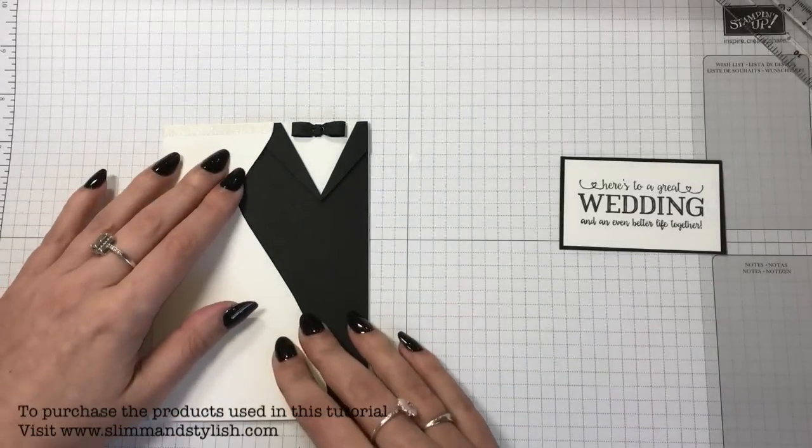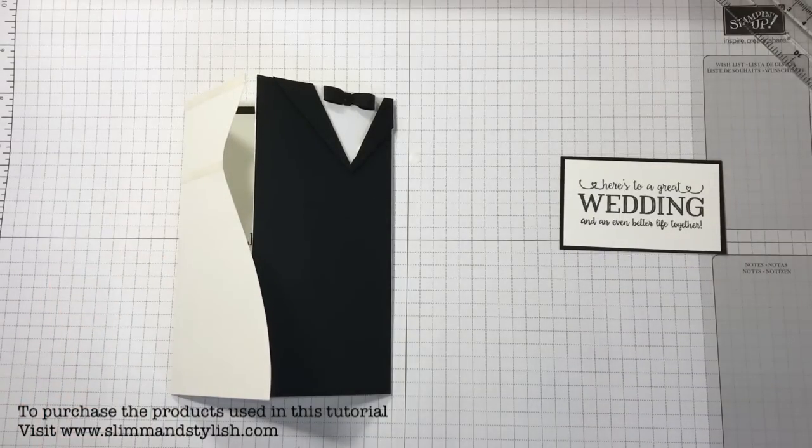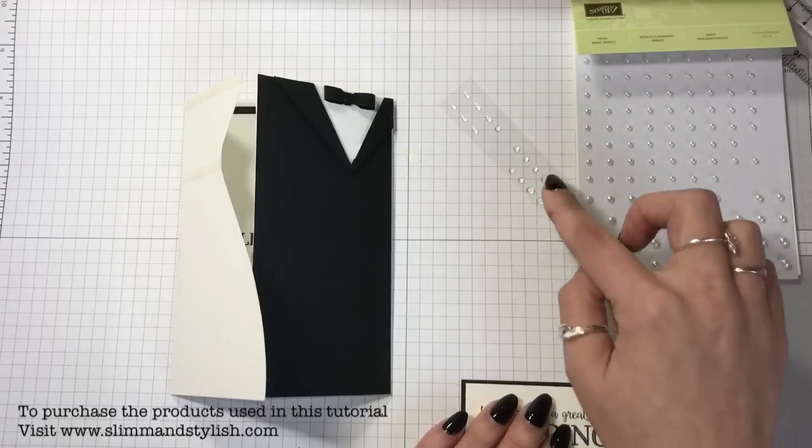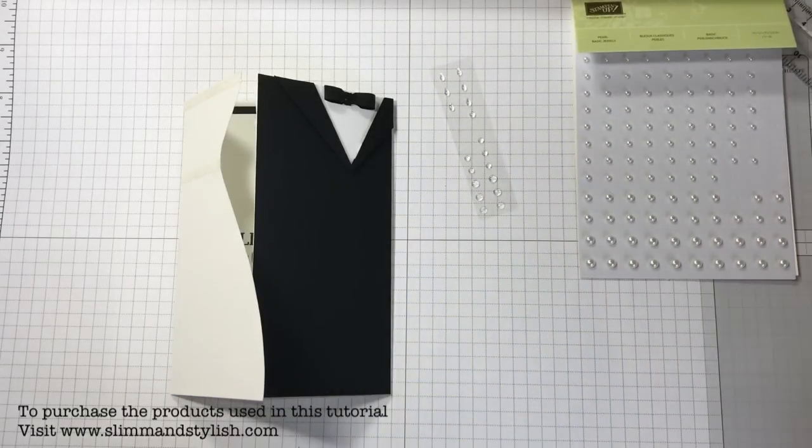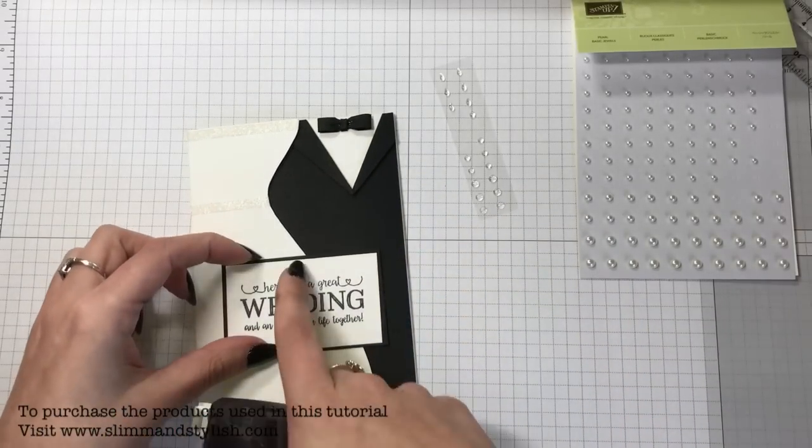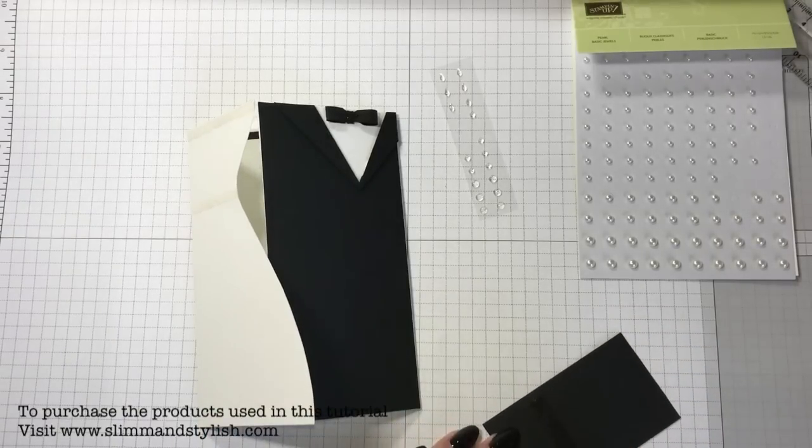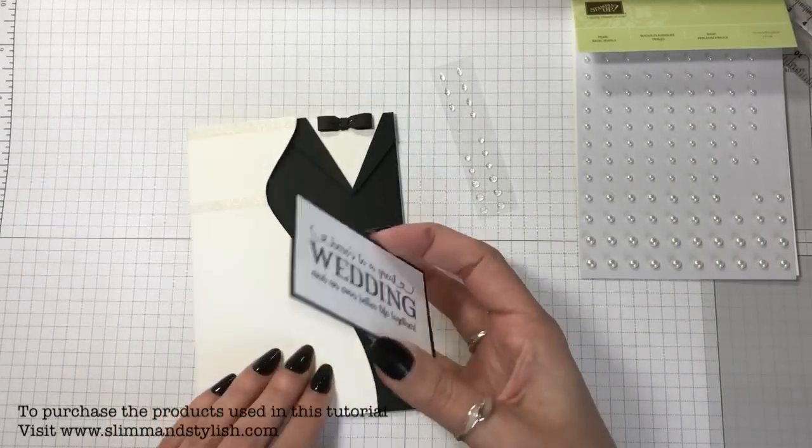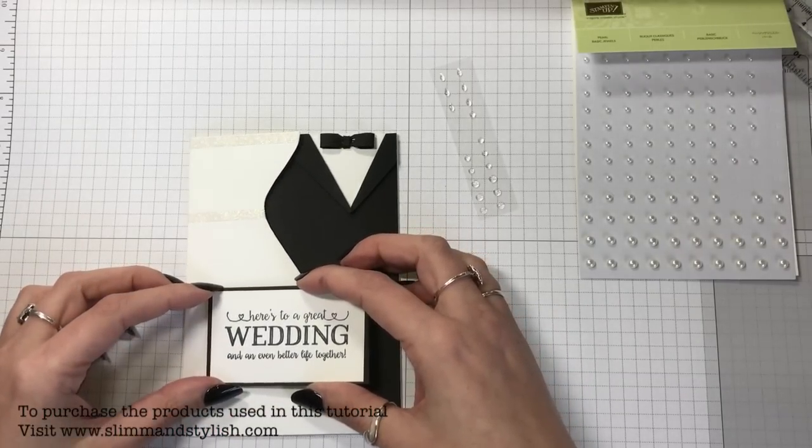Pop that in there. Now to decorate the outside and to make it look like a proper suit, I used the pearls and the epoxy glitter dots that are from the Occasions catalogue. These ones are from the annual catalogue. To work out where I was going to place them, I just put the sentiment on the front, so I fast fused half of this and stuck it down about there.